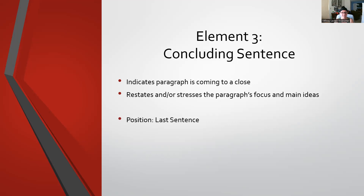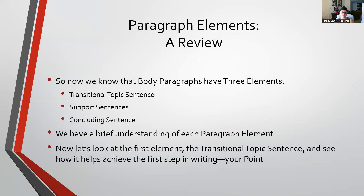Your concluding sentence is the last sentence of your paragraph. Its job is to let the reader know the paragraph is coming to a close, and it will somehow restate or stress the paragraph's focus. Whatever the transitional topic sentence indicated, your concluding sentence is going to remind your reader of that in some way. So those are the three elements of a paragraph: transitional topic sentence, support sentences, concluding sentence.